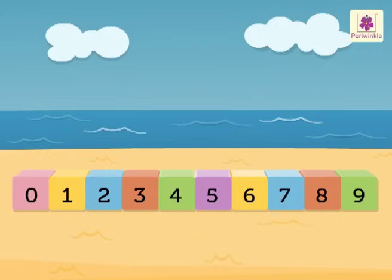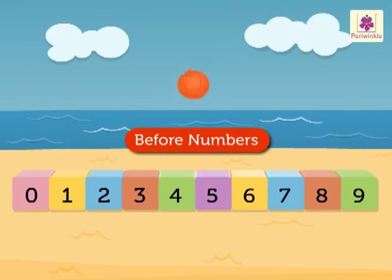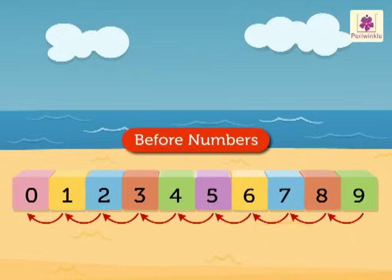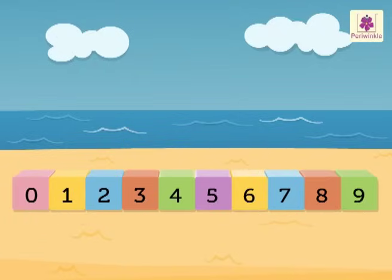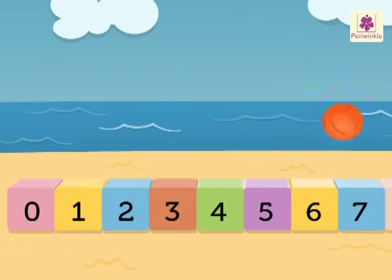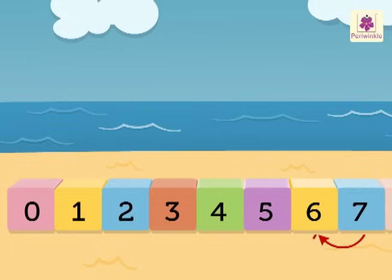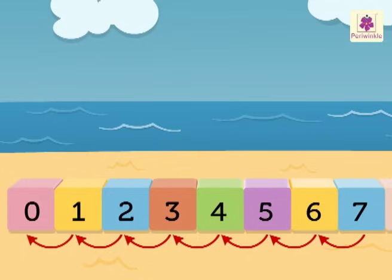Now let's see what we mean by before numbers. When we count backwards from a given number, we get the numbers before. Let's count backwards from 7: 6, 5, 4, 3, 2, 1, 0. All these are numbers before 7.